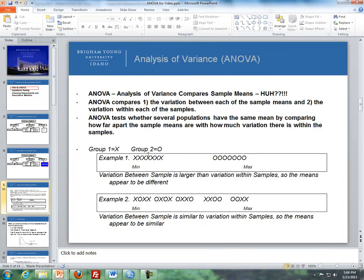Here's a simple example where we take group 1 represented by X and group 2 represented by O. Say the results come in for the X's that are bunched up like right here, and for the O's they're bunched up over here. Because the difference of the variation between the samples is larger than the variation within the samples, that would mean it appears that the means are different.